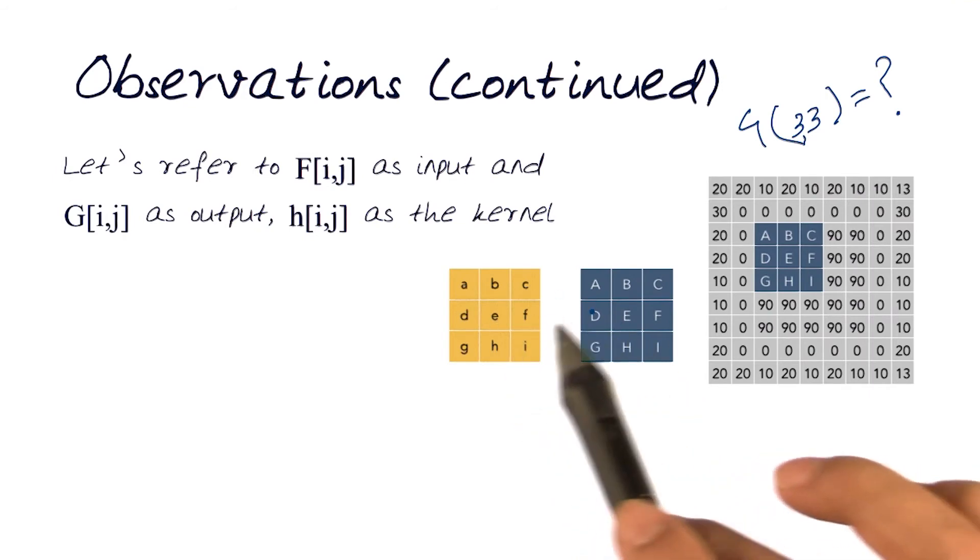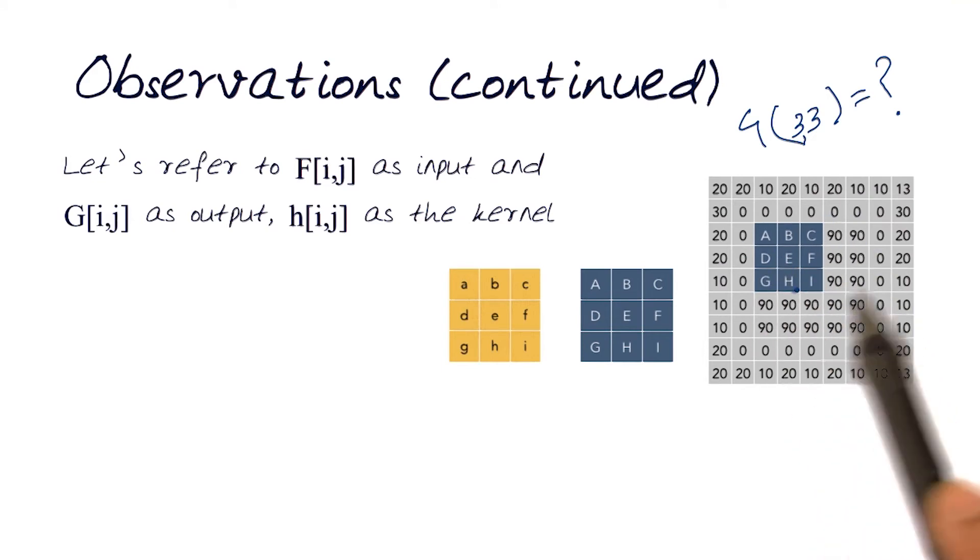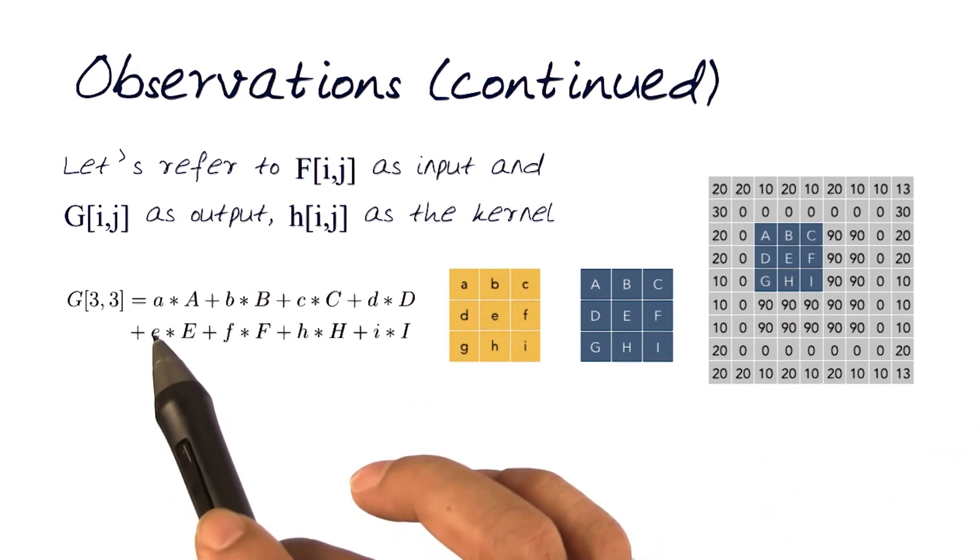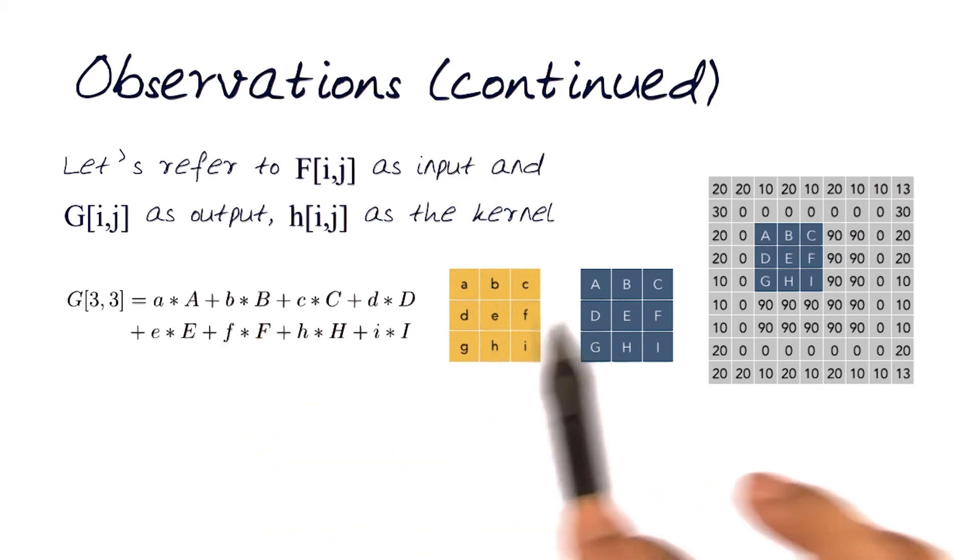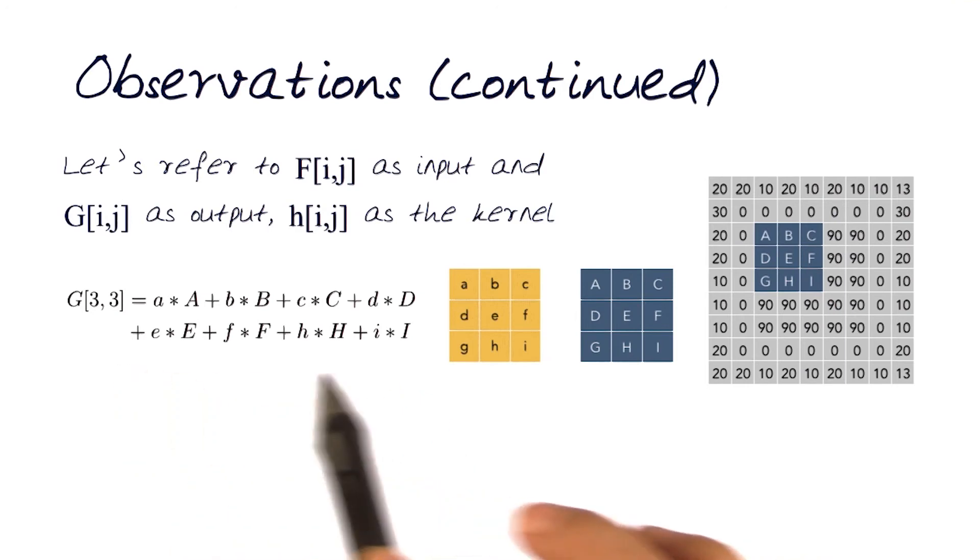For generality, let's just now play around with just these two for now. And again, this is the one that is basically moving around inside this. So g[3,3], the value here in the output, would therefore be the summation of lowercase a with capital A, lowercase b with capital B, and doing that for each and every element, the 9 elements here. So this would be my equation.